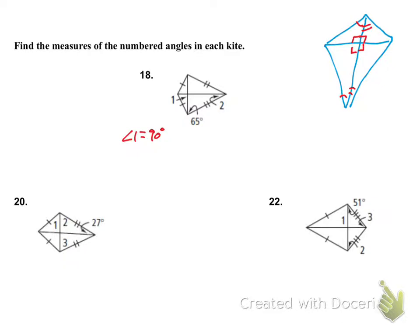We need to find measure two. We're given 65 degrees, and we know this angle is 90. Pulling out that triangle: this is 90, this is 65, and we need the missing angle. So I do 180 minus 90 minus 65, and I get 25. So angle two is equal to 25 degrees.